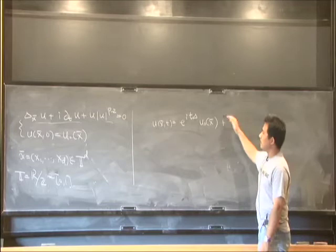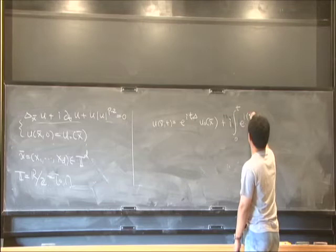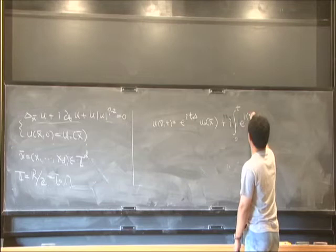By Duhamel's principle, one can write there's i, and we have an extra integral from 0 to t, and e^(i(t-τ)·Laplacian) times u·|u|^(p-2)(x,τ) dτ.